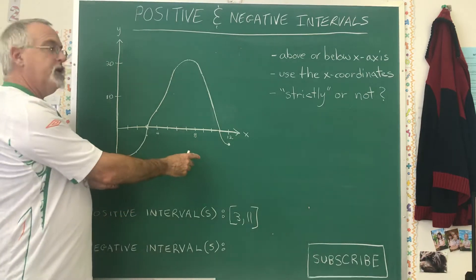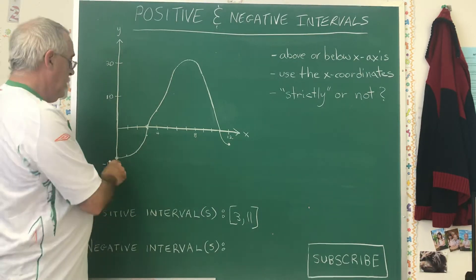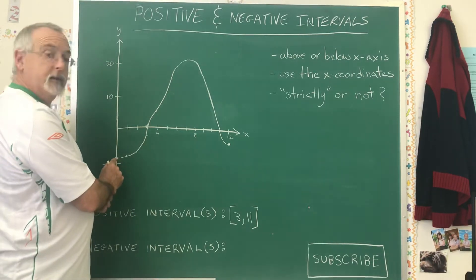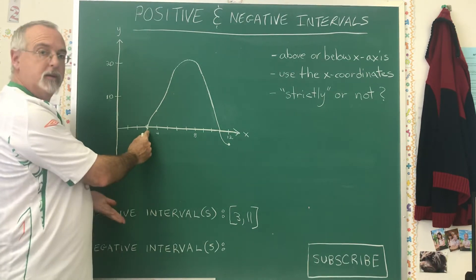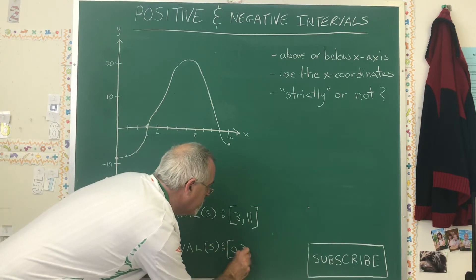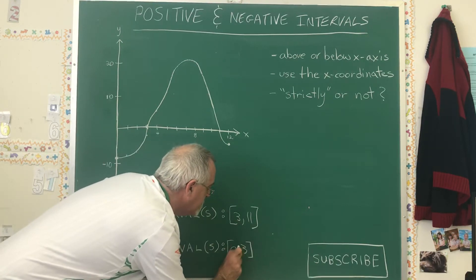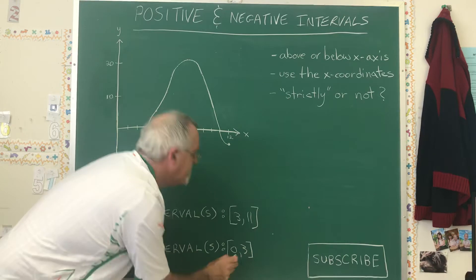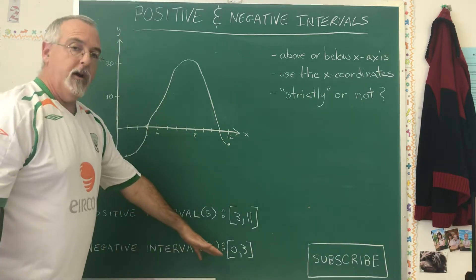In this situation, there are two negative intervals, though. One of them starts here, where x equals 0, and it continues to where x equals 3. So 0 comma 3 in square brackets is one of my negative intervals.